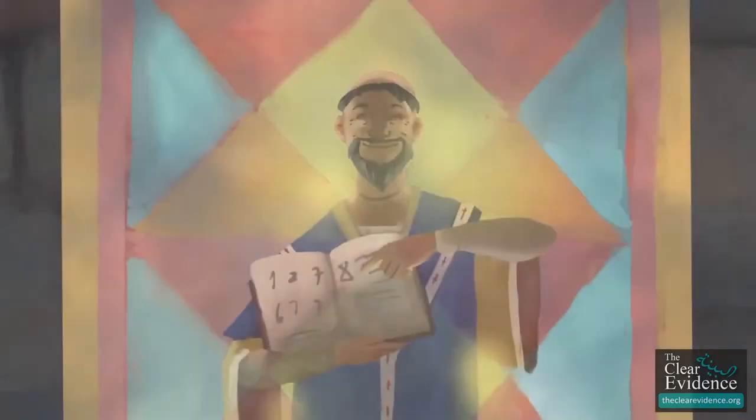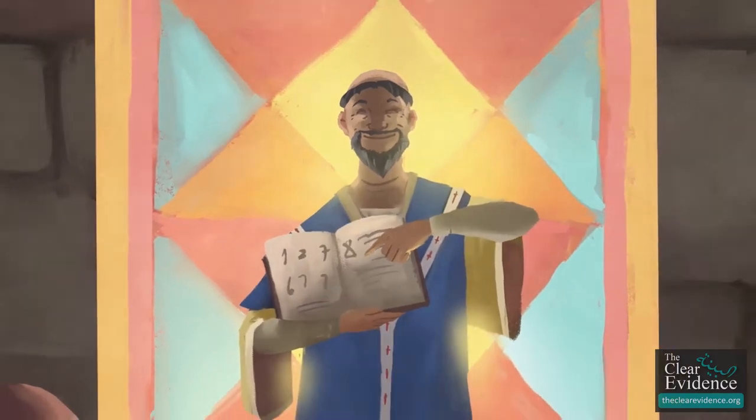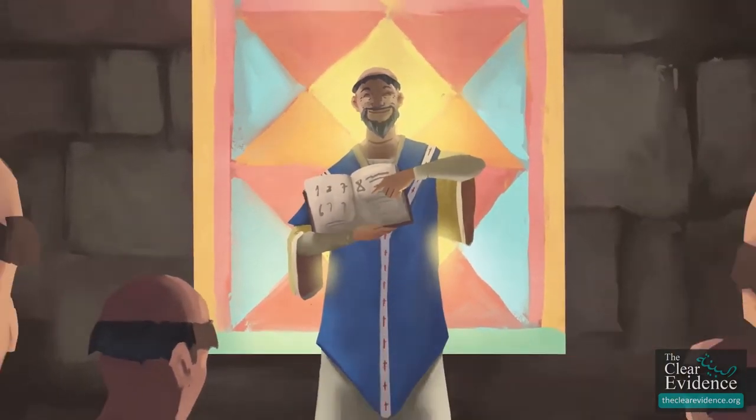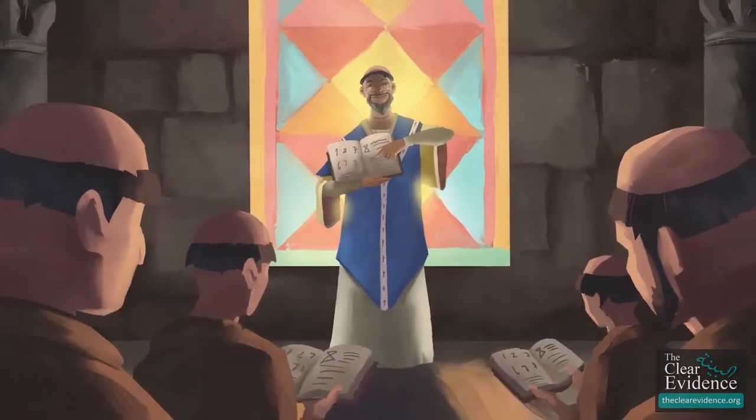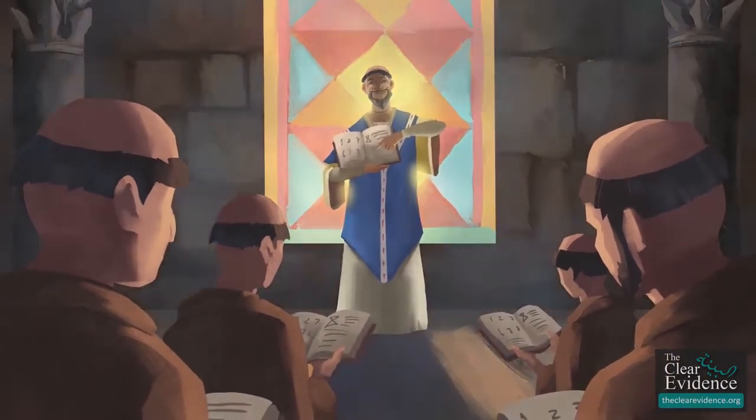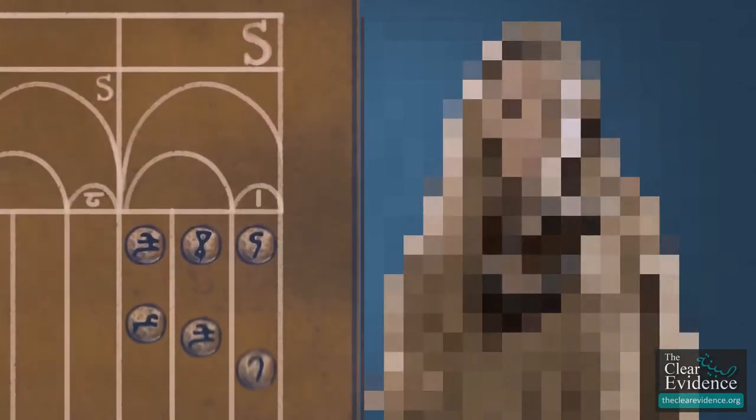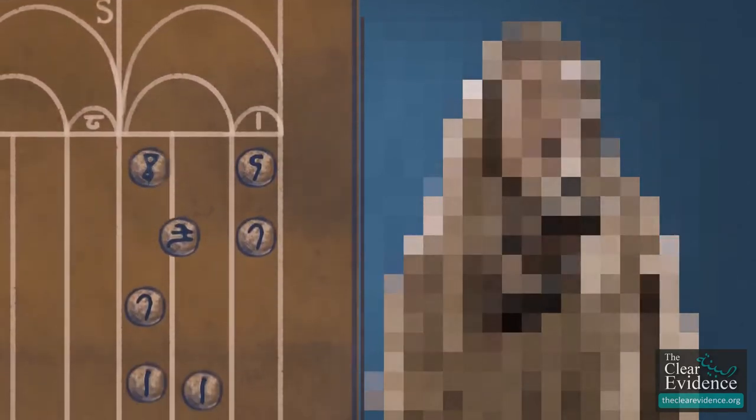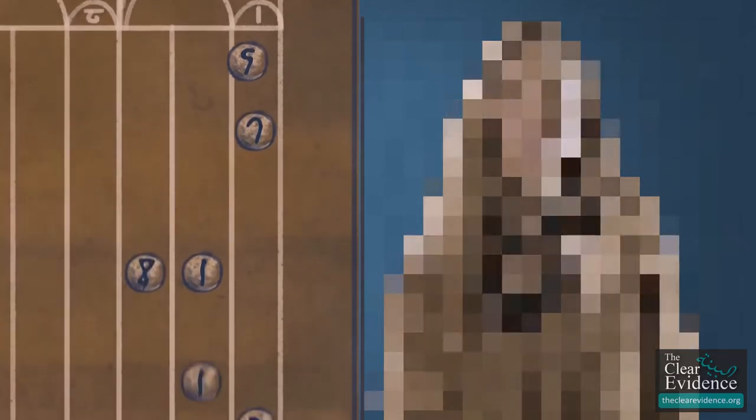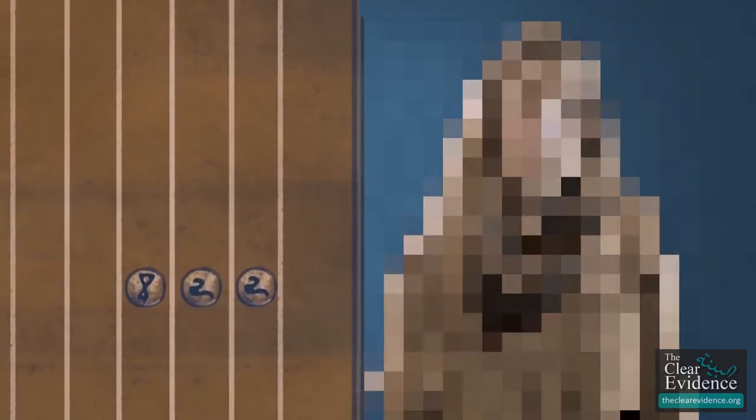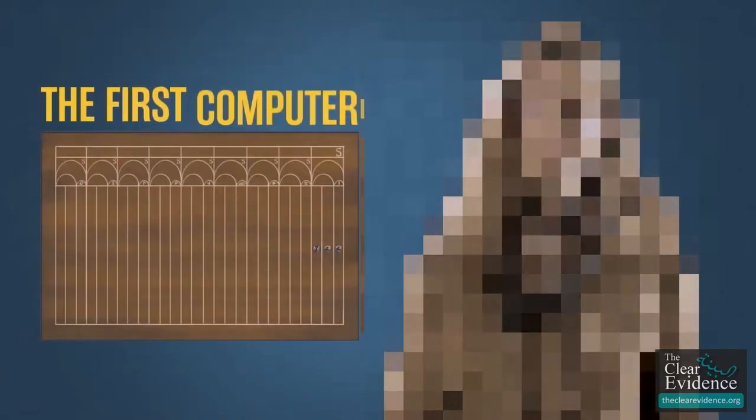A professor at a cathedral school in France for most of his career, Gerbert of Aurillac was the first Christian known to teach math using Arabic numerals. He devised an abacus or counting board that mimics the algorithms we use today for adding, subtracting, multiplying and dividing. It has been called the first computer.